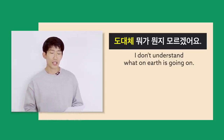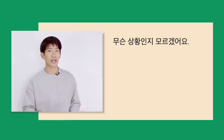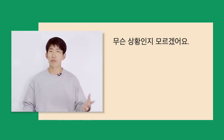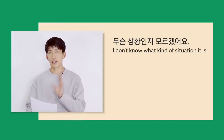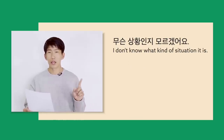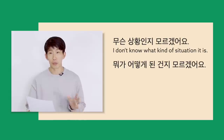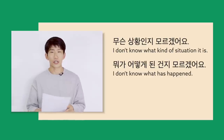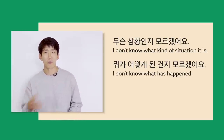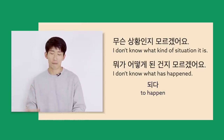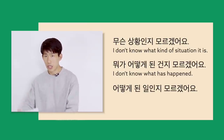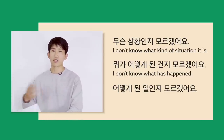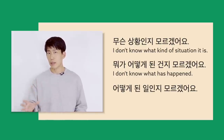And a similar sentence: 무슨 상황인지 모르겠어요 — they're fighting over something, but I'm confused. What are they fighting about? 무슨 상황인지 모르겠어요, I don't know what kind of situation it is. 상황 is situation. And another common one: 뭐가 어떻게 된 건지 모르겠어요. 뭐가 어떻게 되다 means 'to happen, to take place.' So — it was right here in front of my eyes, but then it disappeared like magic. 일 here means not 'work' but 'something that happened.' I'm so confused.